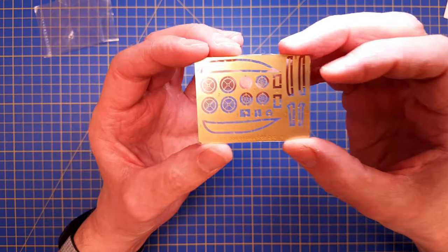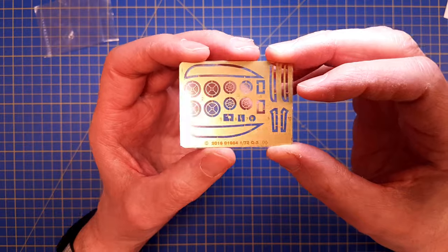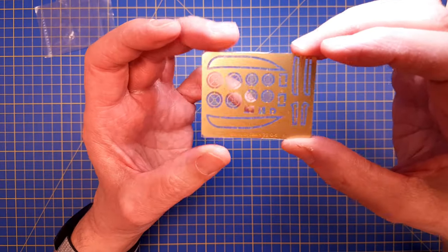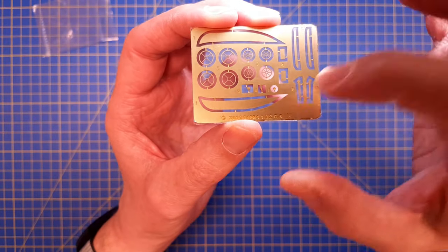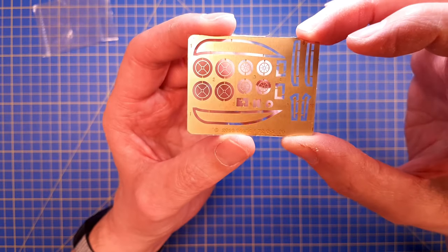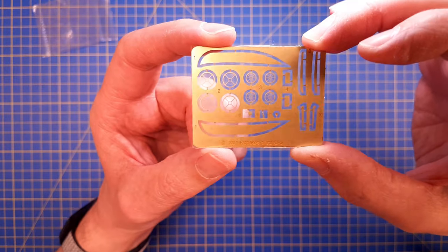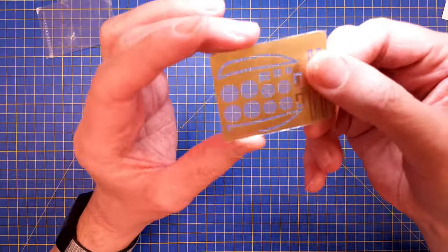If we look at the details, we have detailing for the engine, some wing fences, and what I believe are small pieces of photo etch that go into the cockpit. Everything looks really nice.